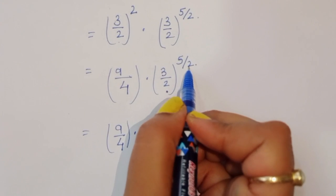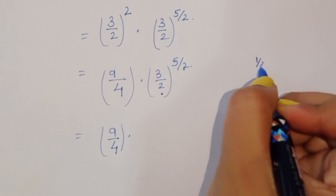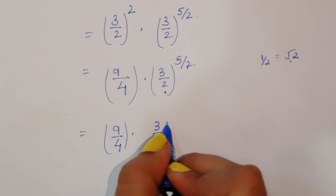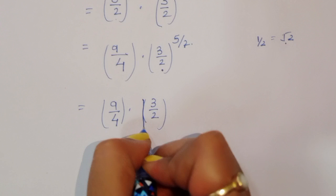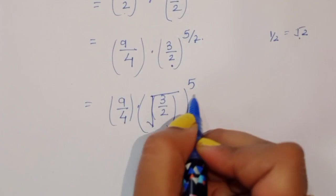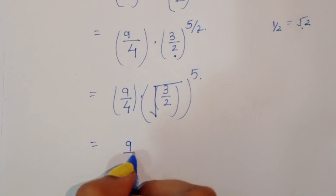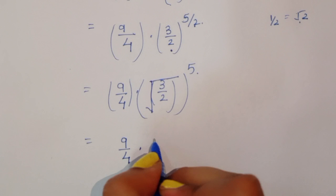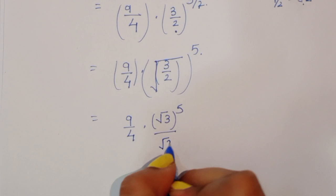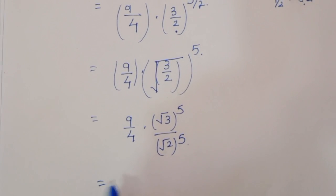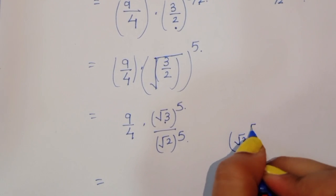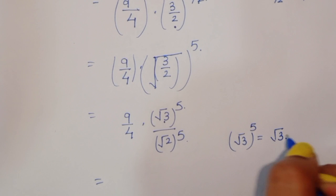We know that power 1 over 2 equals square root. So we can use square root here. We take (3 over 2) inside a square root raised to the power 5. We can separate this as square root of 3 power 5 divided by square root of 2 power 5.